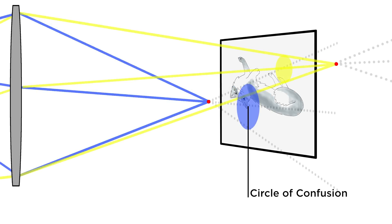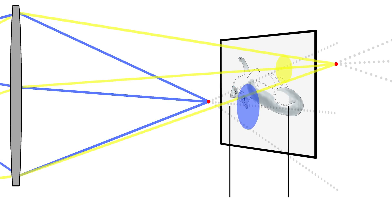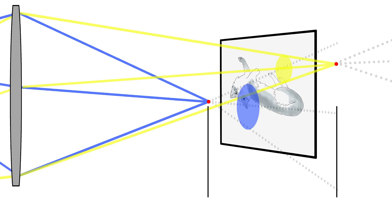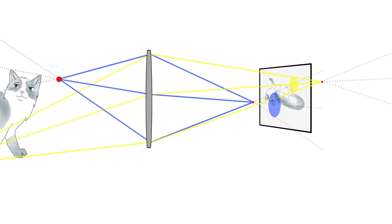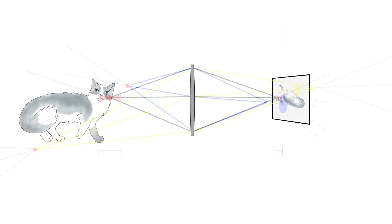These blurry circles are called the circle of confusion. The further away these light rays converge from the sensor, the larger blurry areas of light, or bokeh, will be produced. If these circles of confusion are small enough to be perceived by a human as a single point, they are within the depth of field, or area of acceptable focus. So technically speaking, depth of field is determined by what the human eye can see.